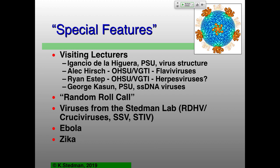You're not going to have to listen to me for every single lecture this term — a couple of guest lectures. Starting already on Friday, my postdoc, Nacho, who is a real expert on virus structure and virus evolution, will be talking about virus structure. Then Alec Hirsch, who's at OHSU VGTI, will be talking about flaviviruses — things like dengue, Zika virus, yellow fever virus. He's one of the world experts on those. If I can get Ryan Estep to come and talk, he's working on herpes viruses at OHSU — a PSU grad who's gone on to do really cool stuff. And then George Kaysen, a PhD student in my lab, has been working on single-stranded DNA viruses, particularly the cruciviruses.